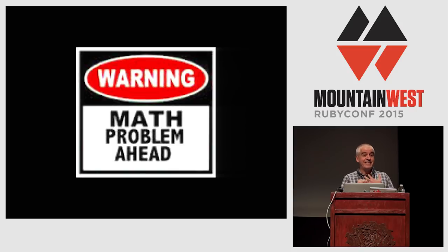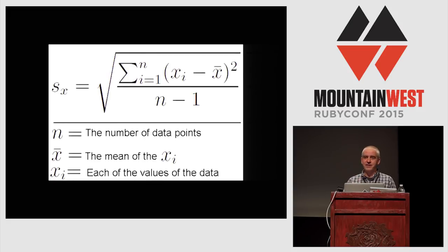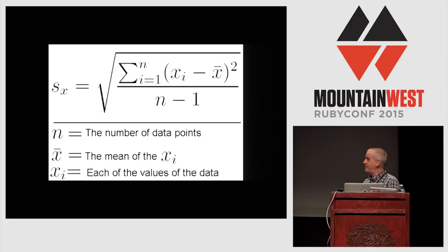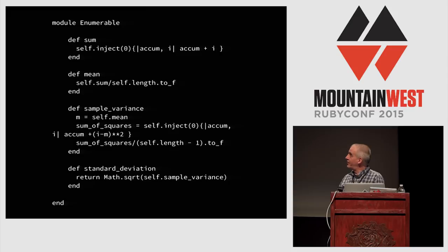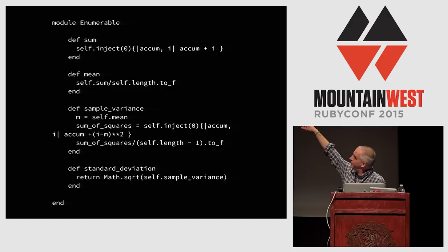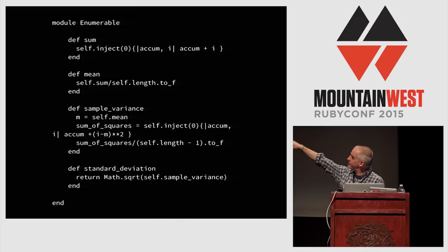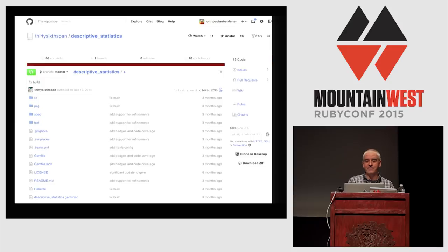Let's do some math. Standard deviation — they do AP statistics now, and it blows me away because I did a lot of that in grad school. But you all like Ruby better. It's not very hard to do in Ruby: sum the data, average it, find the variance by summing all the differences of squares, then take the square root for the standard deviation. In fact, I could use the descriptive statistics gem and jump right through it.